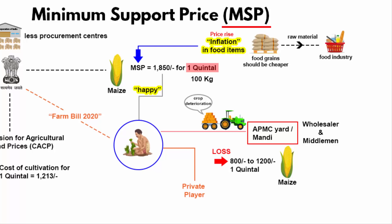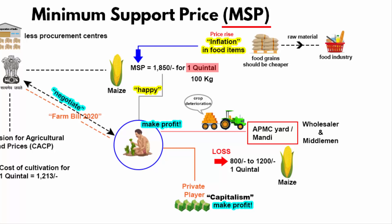Like it or not, the private sector has the money. There are concerns when you let the private sector in, because capitalism works in a certain way — its most essential feature is to make profit. Even farmers want to make a profit and live a good life. The vision has to be clear: open the agricultural market to the private sector. Simply increasing the MSP is not the solution — that will cause inflation in the food industry.